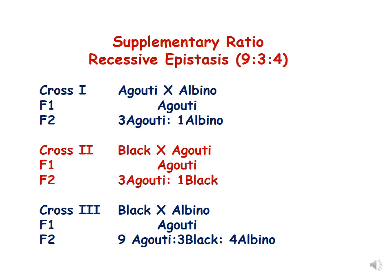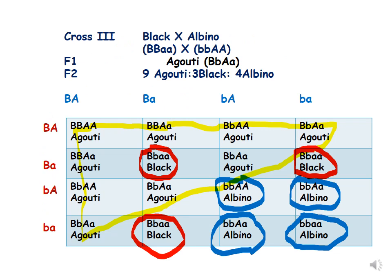Since 9 plus 3 plus 4 equals 16, this is a modified dihybrid ratio, indicating color is controlled by two pairs of genes. In cross 3, the genotype of black is taken as BBAA (homozygous dominant B, homozygous recessive aa), and albino as BBˈAAˈ (homozygous recessive bb, homozygous dominant AA). In F1, the dihybrid BbAa gave the agouti pattern, and F2 produces the 9 agouti to 3 black to 4 albino ratio.